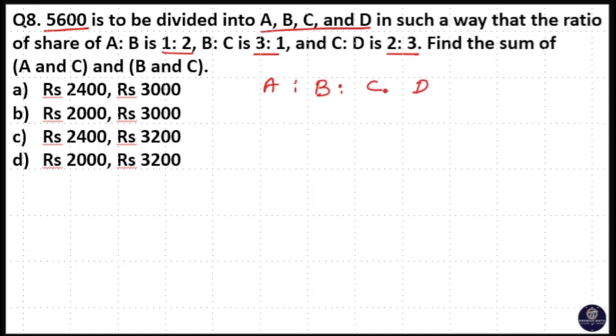Rupees 5600 is divided between these four people. A:B share is 1:2, B:C share is 3:1, C:D share is 2:3. So you know the rule: 2 will come here, 2 will come here, 3 will come here, 1 will come here.